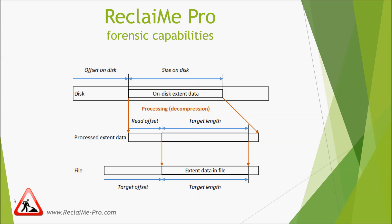Once data is processed, the needed part of the processed data is accessed. Data is used partially, for example in btrfs, when the same on-disk extents are used by different versions of the same file in different snapshots.